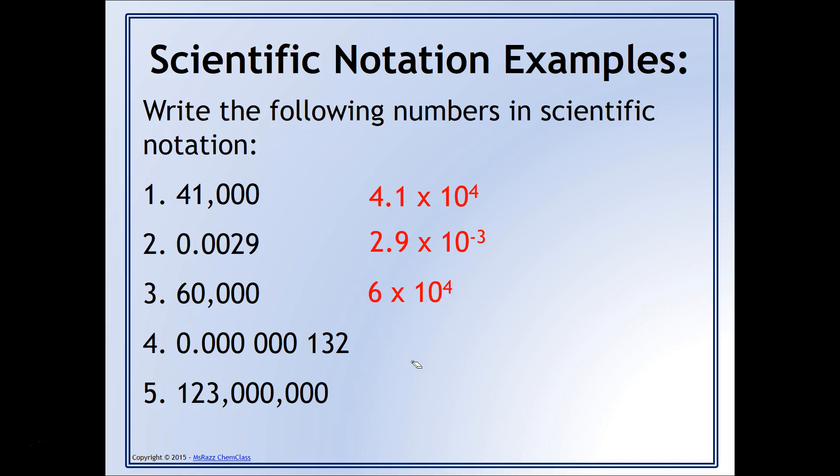For the number 60,000, that would be 6 times 10 to the 4th. The coefficient wasn't too tricky here because, again, this is a number that's going to be less than 10.